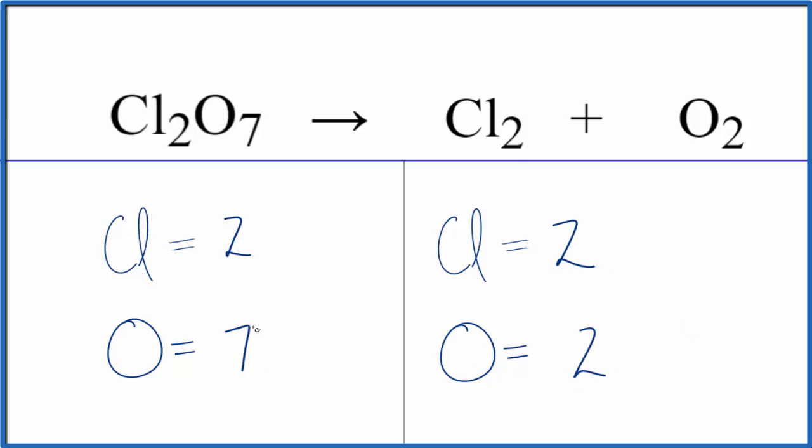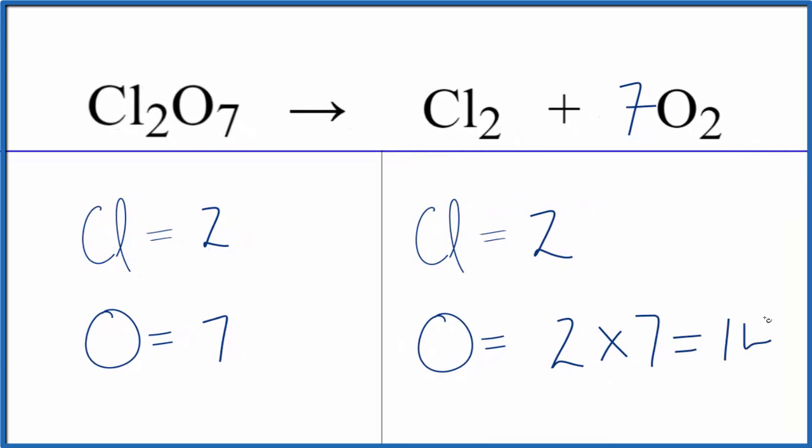Often when you have something like seven here and two here, and these are already balanced, if you put a seven right here in front of the oxygen, two times seven, that'll give us 14.